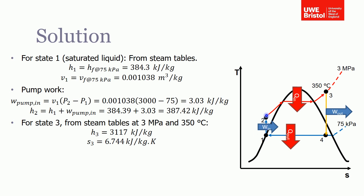Remembering that no heat is supplied between states one and two, so the change in enthalpy is just equal to the work done. Now we need to find the enthalpy at state three, which is reasonably easy because we're told the conditions of the steam there: 3 megapascals and 350 degrees C. We can just look in the steam tables and read the enthalpy straight out as 3,117 kilojoules per kilogram.